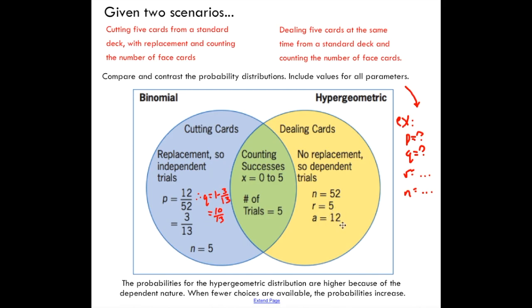The successful outcomes, A, there are 12 face cards in the deck. We're counting face cards. So there are 12 possible successful outcomes. And that's really all that I want you to look at for hypergeometric distribution. So just compare the two. You can see with cutting cards, you're replacing. So you have independent trials. That's what tells you you have a binomial distribution.